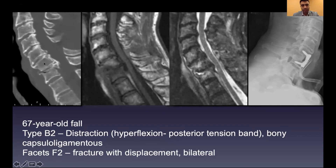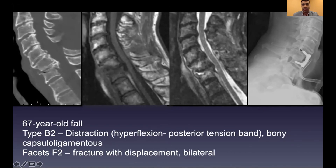What can happen is you end up taking off too much of the vertebral bodies above and below — partial corpectomies — and the graft placed in can easily subside, causing more problems. The patient may develop a cervical kyphosis and chin-on-chest deformity, which is a disastrous outcome.